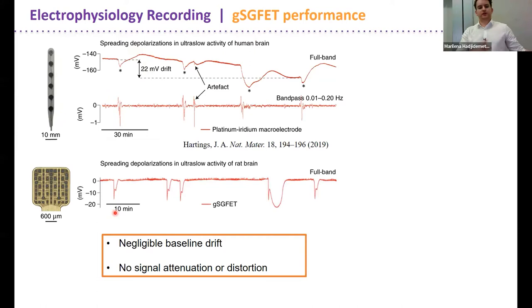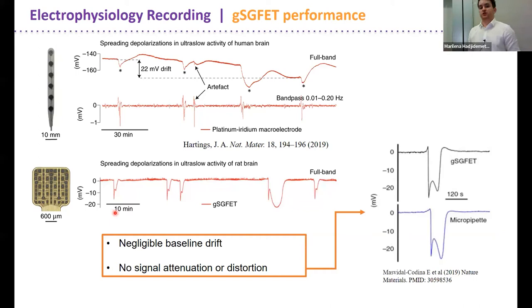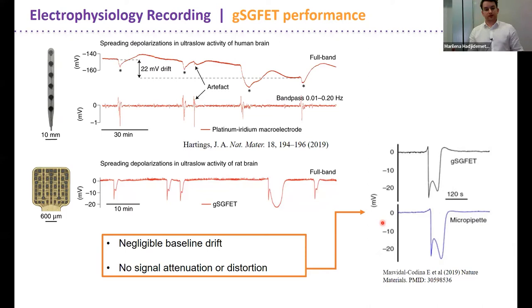How does this compare to previous devices? We see no signal drift when recording spreading depolarizations, and no signal attenuation or distortion — unlike the platinum iridium electrodes. We confirm this by recording the same depolarization simultaneously with the gold standard glass microelectrode placed next to the array. They show the exact same waveform and amplitude. We now have a technology combining the advantages of both platinum iridium and glass microelectrodes, with very high fidelity recording and spatial mapping capability.